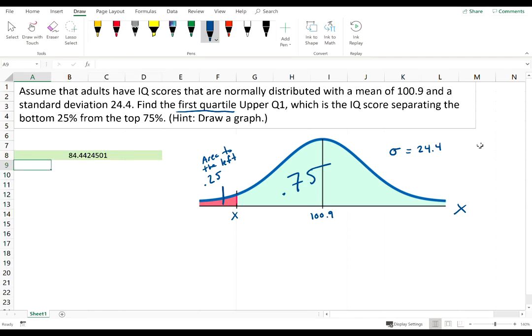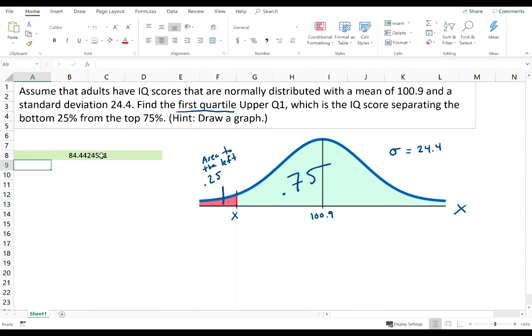We should probably round this to one decimal place because the other values are rounded to one decimal place. So it looks like 84.4 is the IQ score that is the 25th percentile, or 84.4 is above 25% of all IQ scores and below the other 75%.